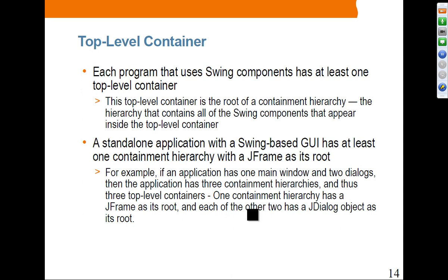Each program that uses Swing components has at least one top-level container, which is the root of the containment hierarchy. A standalone application with a Swing-based GUI has at least one containment hierarchy, with JFrame as the top-level container. If the application also has dialogs, it might have JDialog as another top-level container. If an application has one main window and two dialogs, then it has three containment hierarchies and three top-level containers — one with JFrame as root, and each of the other two with a JDialog object as its root.